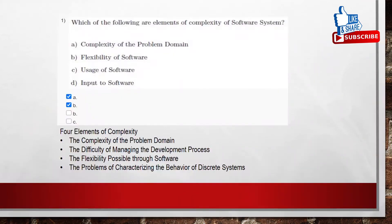Coming to the first question. Which of the following are elements of complex software system? Here we are having four options. Complexity of the problem domain, Flexibility of software, Usage of software, and Input to software.